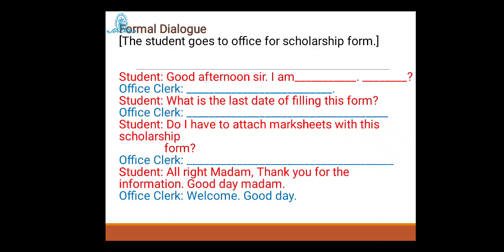Here is a formal dialogue exercise where you can insert some sentences and words — the next dialogue will give you a hint. The situation is: a student goes to an office for a scholarship form. Student: 'Good afternoon, sir. I am...' — here you write the name of the student — asking a question, to which the office clerk gives the answer. The student asks, 'What is the last date of filling this form?' The clerk answers. Student: 'Do I have to attach mark sheets with this form?' Office clerk gives the answer. Student: 'All right ma'am, thank you for the information. Good day ma'am.' Office clerk: 'Welcome, good day.'